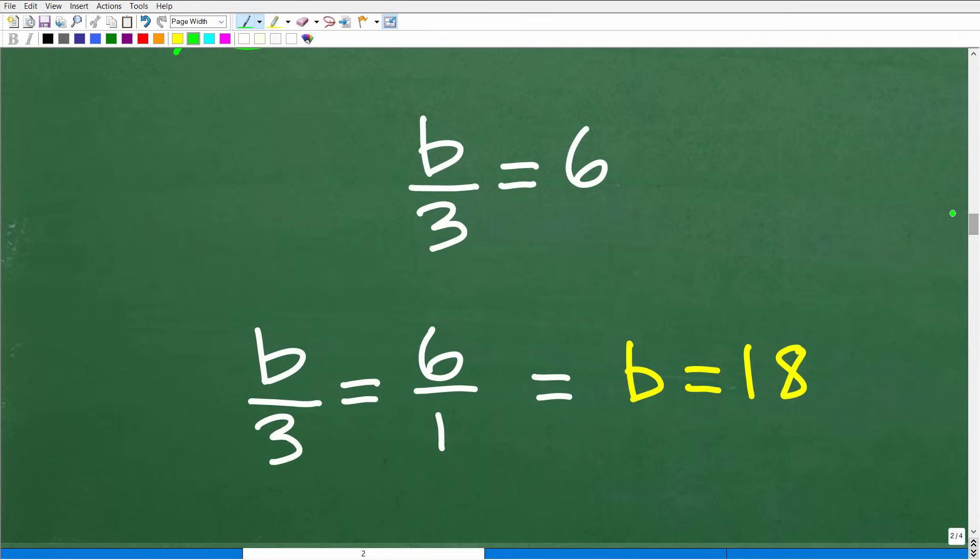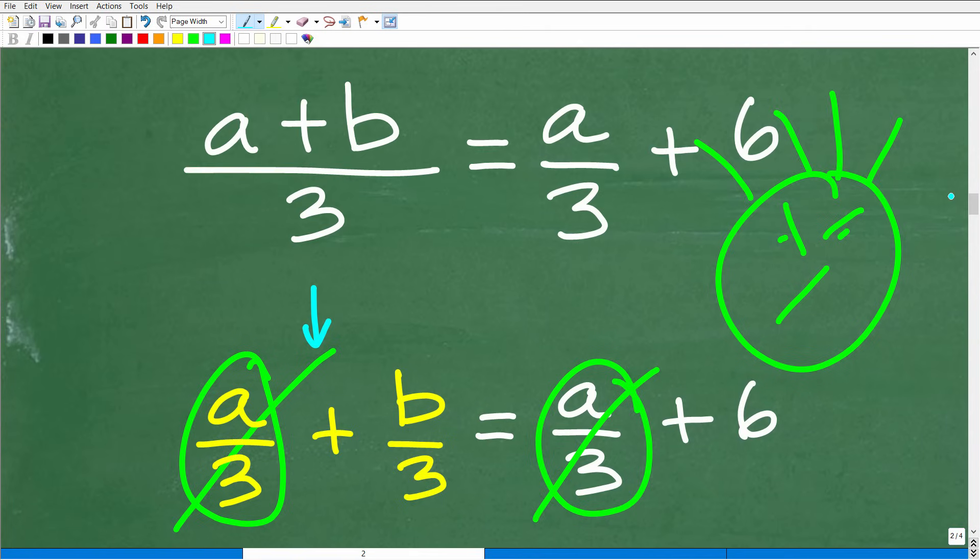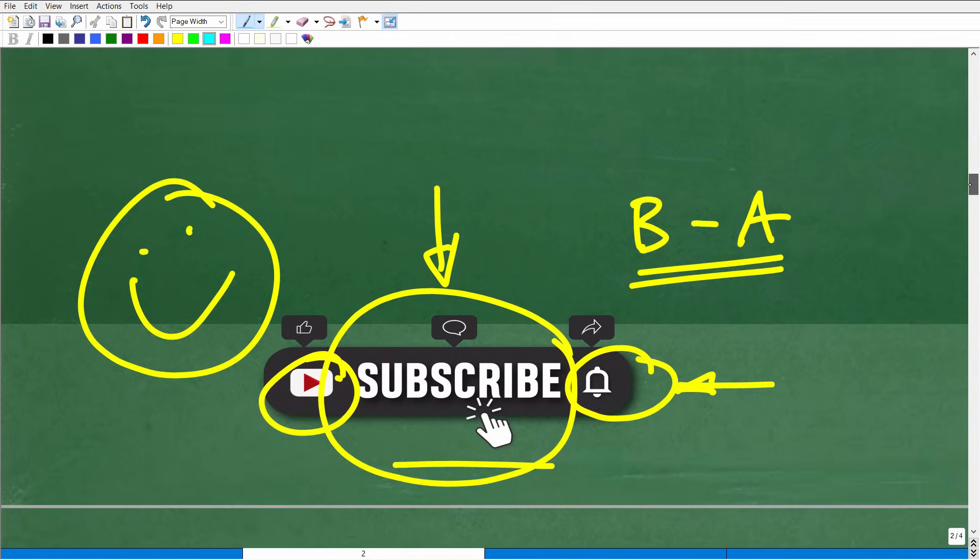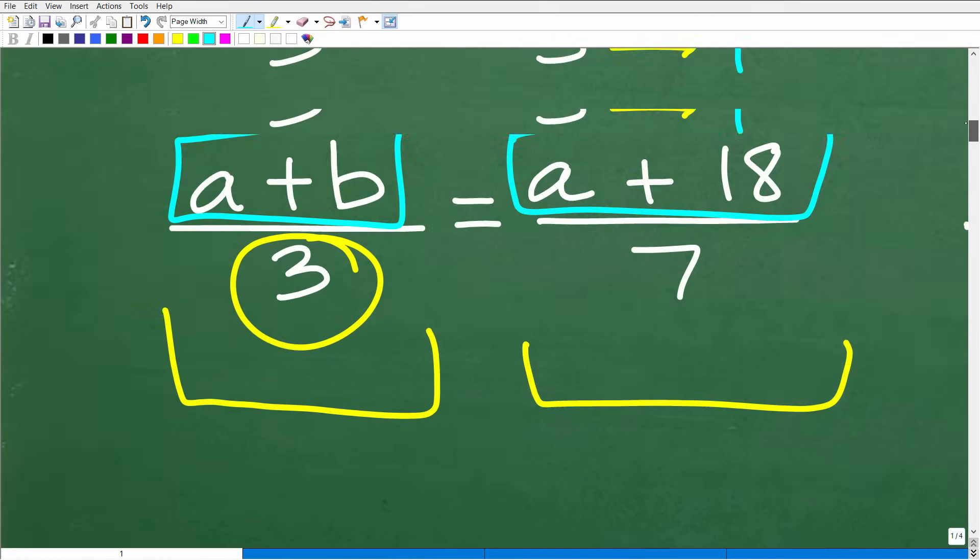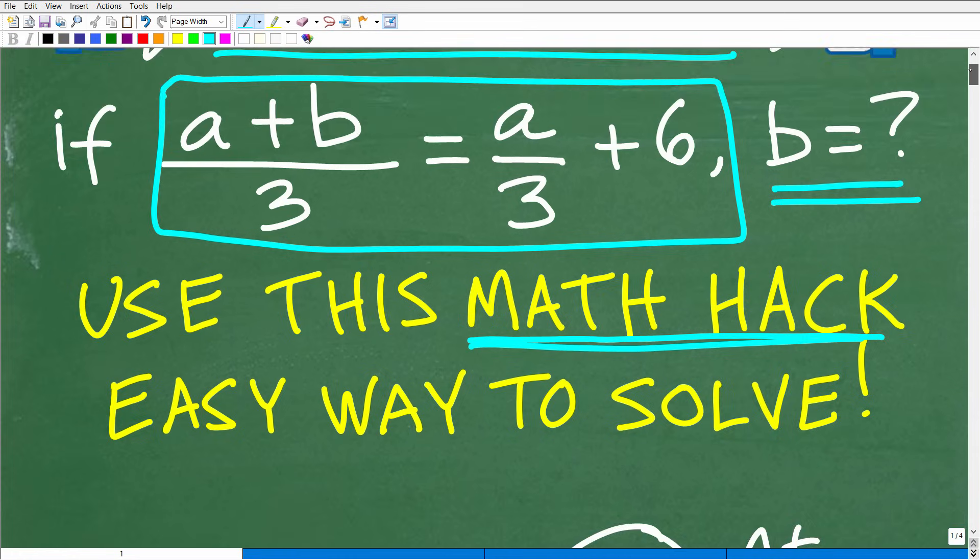Okay? All right, so now we have b over 3 is equal to 6. So we could just think of this as a simple proportion and just go, all right, 1 times b is b and 3 times 6 is 18. There you go. b is equal to 18. All right, so probably for me, I would have probably taken this approach, kind of split this fractions. But it's really kind of developing your eye to see things, right? And you want to kind of add to your math toolbox, right?